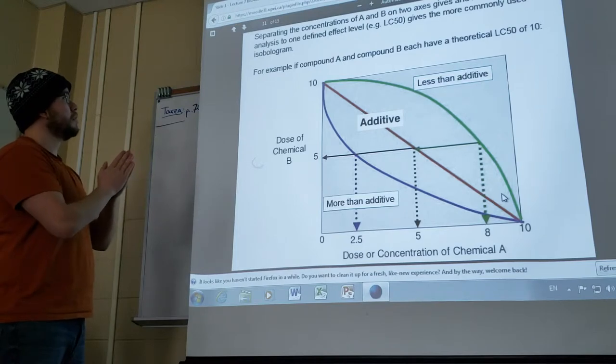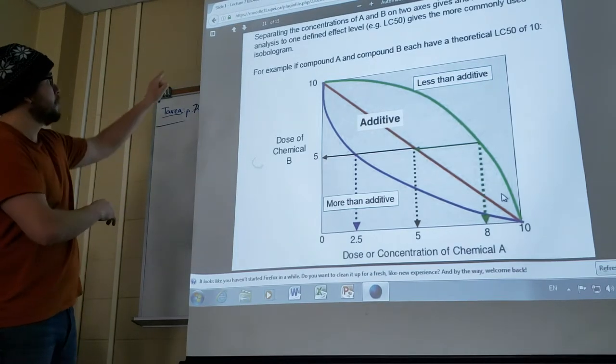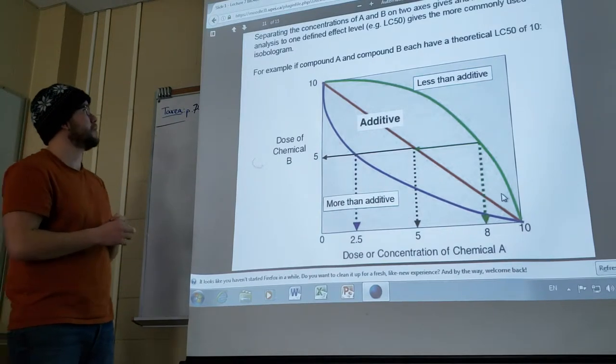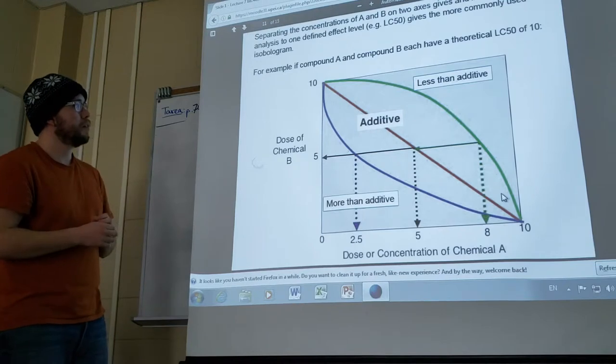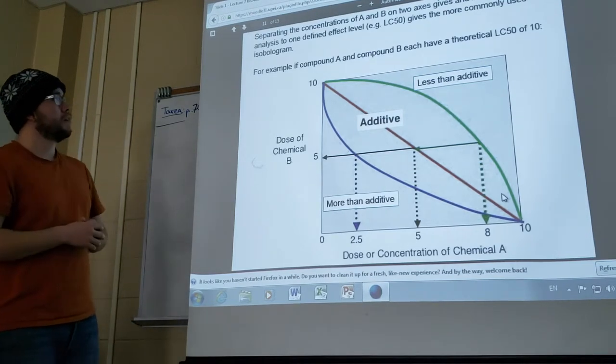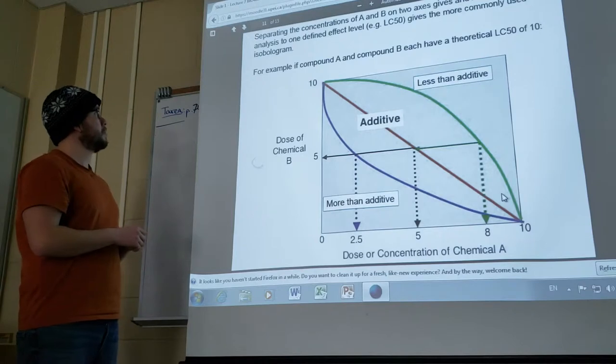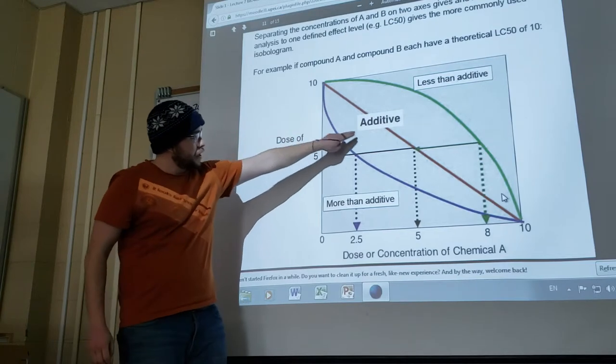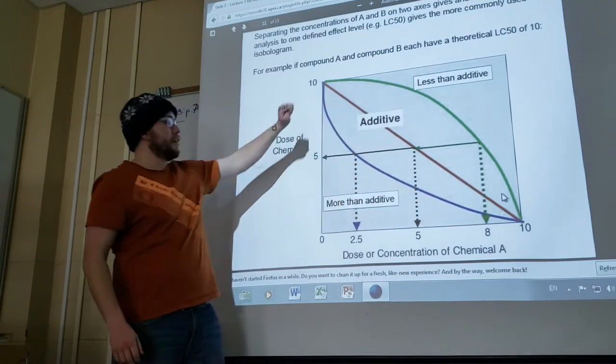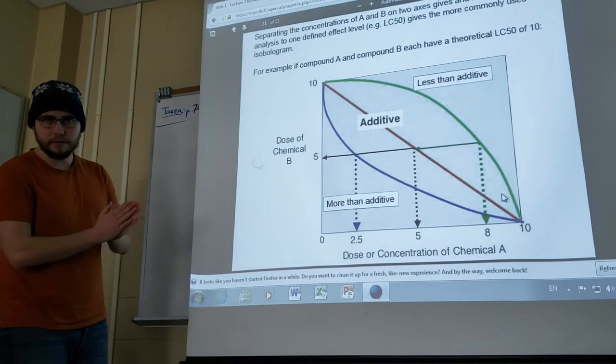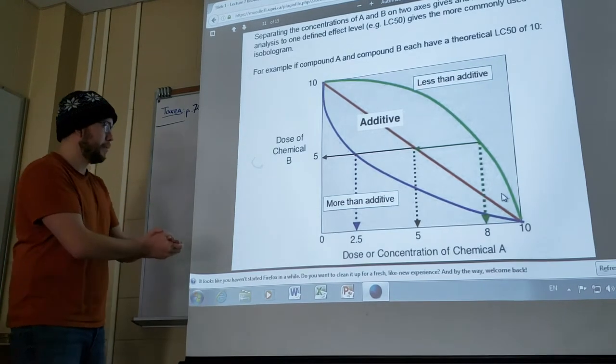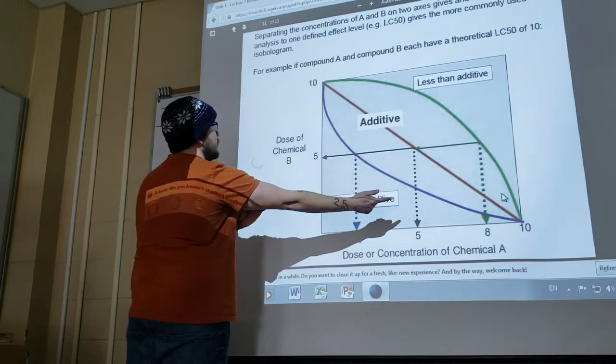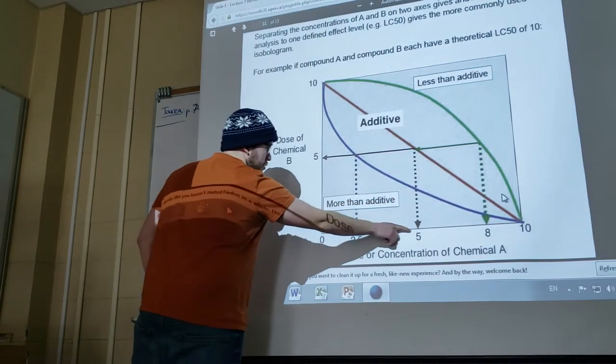Let's look at this more closely. Separating the concentrations of A and B on two axes and limiting the analysis to one defined effect level gives the more commonly used isobologram, which is this figure you see here. As I said before, the middle line is the additive line. On top is the less than additive line, and the bottom one is more than additive. Now this seems counterintuitive, but it's not. Notice if you have 10 in total, the theoretical LC50 of 10. When the LC50 of compound A is 5 on an additive scale, the dose of chemical B is 5.